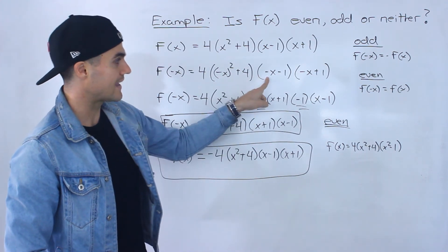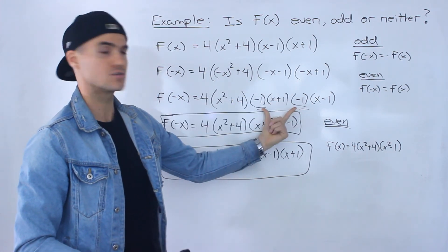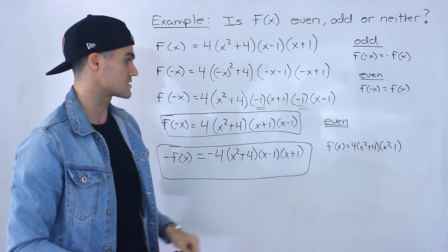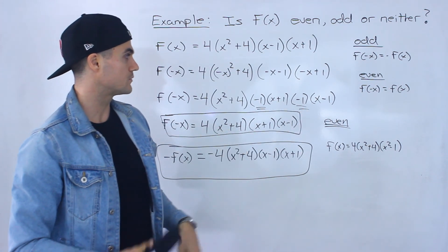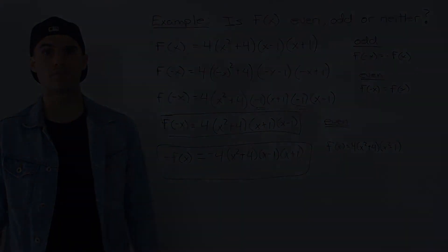Right? But because we had a negative x here and negative x there, we had to do that factoring process. Right? So whichever way you do it, this function is even.